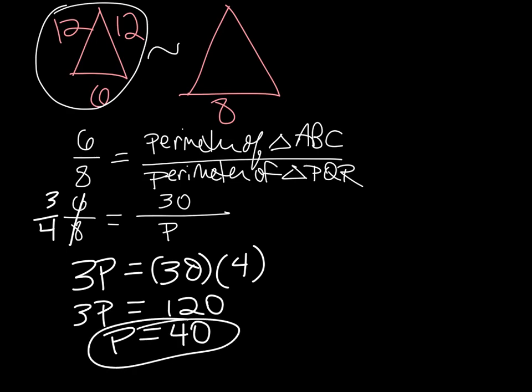So I can figure out the perimeter of a similar triangle that way as well. In both cases I got that the answer was 40.